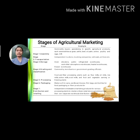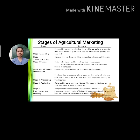Stage five is processing. This involves food and fiber processing plants such as flour mills, oil mills, rice mills, cotton mills, wool mills, and fruit and vegetable canning or freezing plants. After grading and classification, the product is processed depending on what is appropriate.